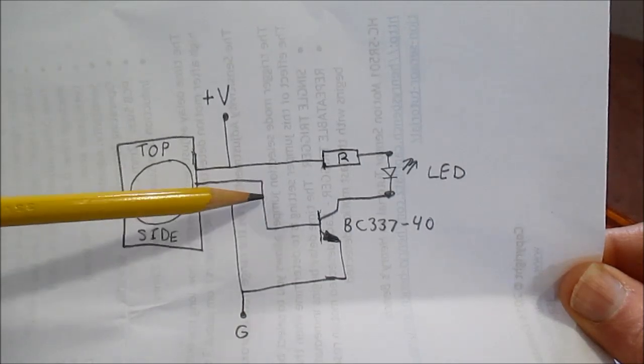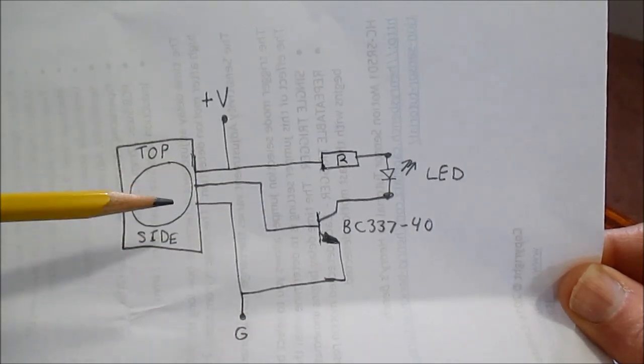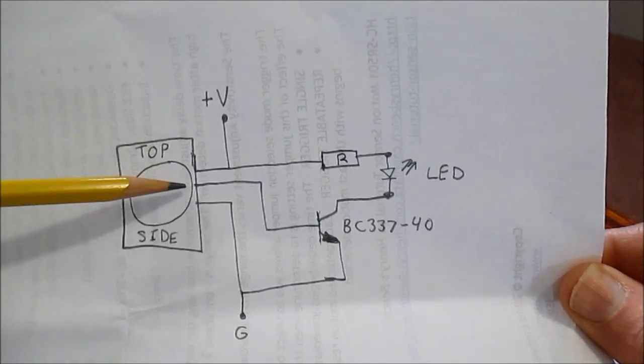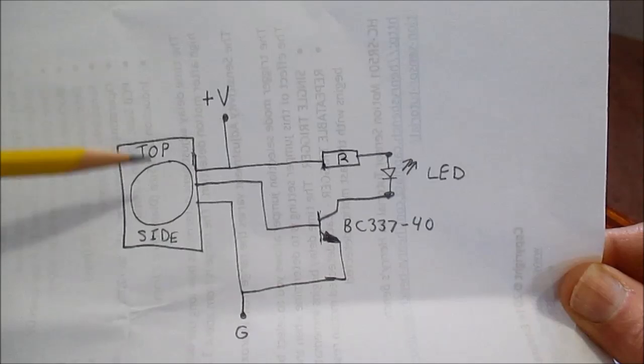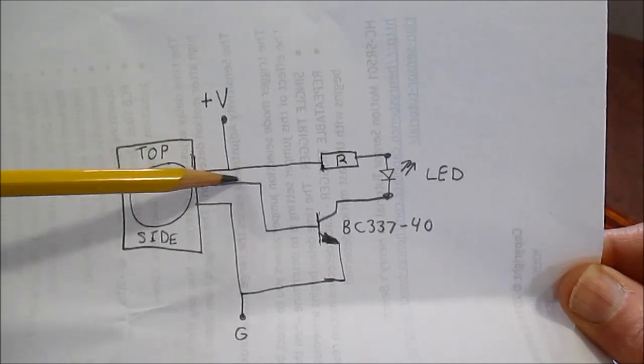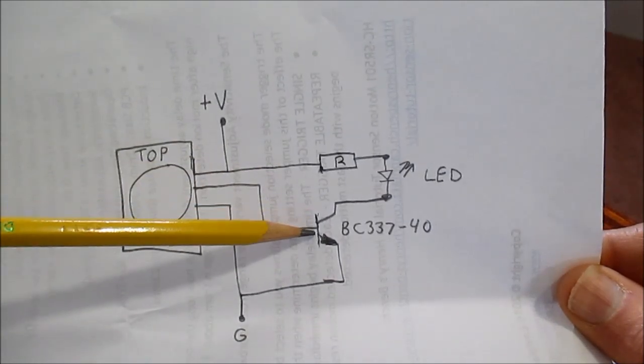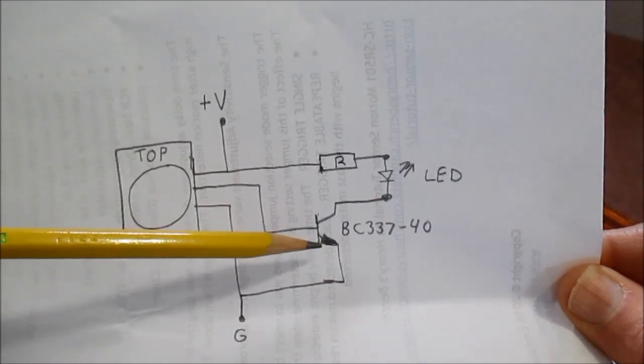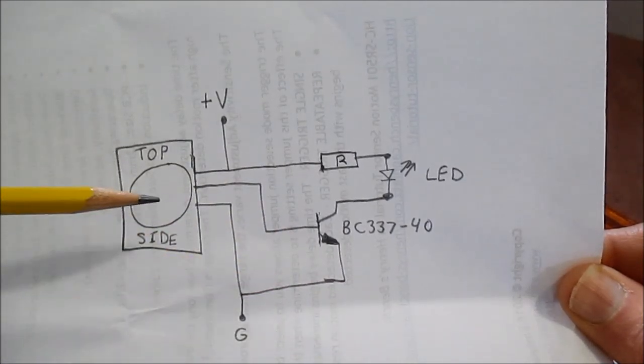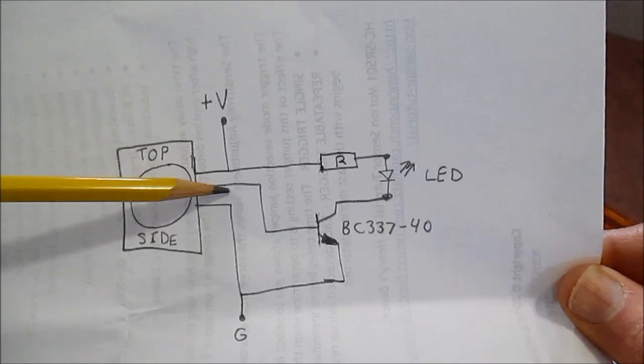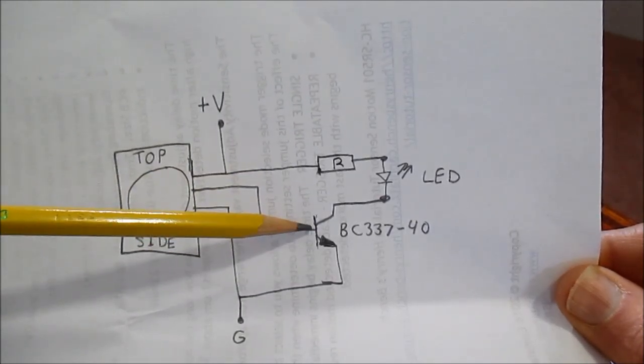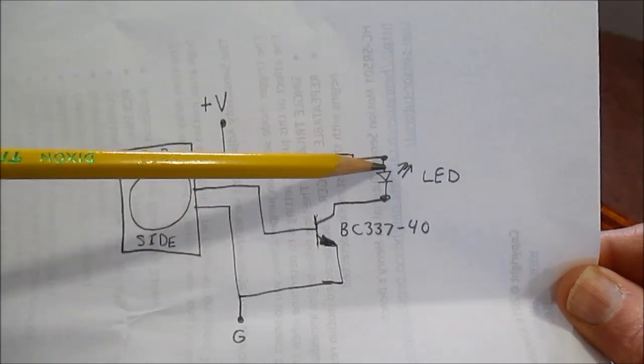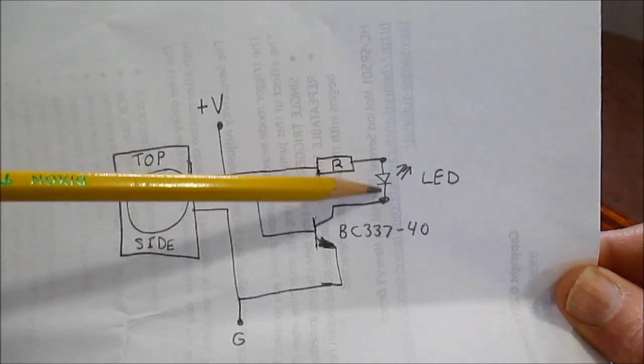You do not need a resistor on the base because I looked at a schematic of this and there's already a resistor built in. So in series with the output. So it's one less part you have to worry about. So you can just connect the output directly to the base of the transistor. So when this triggers, it will send a high out to the base of the transistor, turning it on, and making the LED switch on.